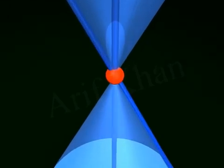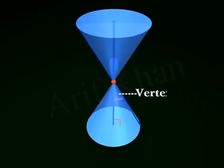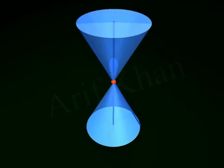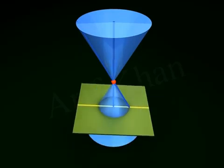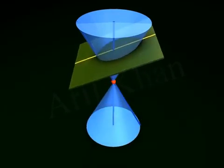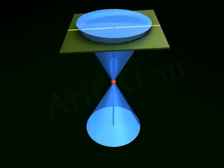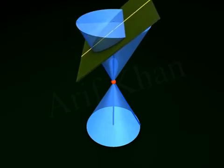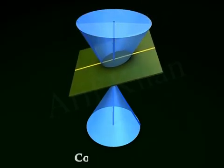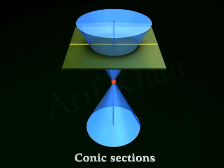Also, the angle between the generator and the axis is called the vertex angle. If a plane intersects a double right circular cone, we get two-dimensional curves of different types. These curves are called conic sections.